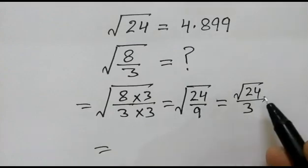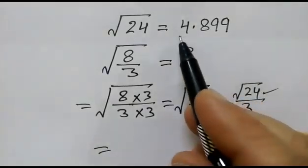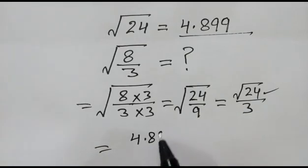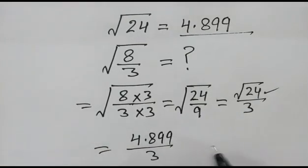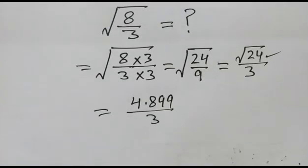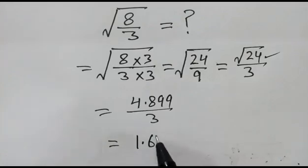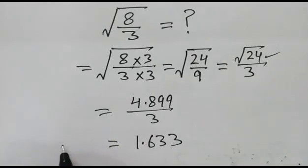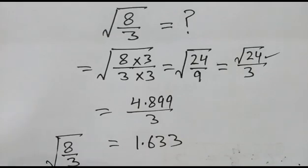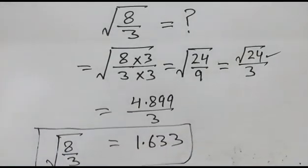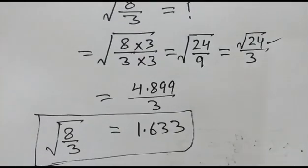As we have given square root of 24 is 4.899, this will be 4.899 over 3, which is equal to 1.633. So square root of 8 over 3 is equal to 1.633. Okay friends, thank you.